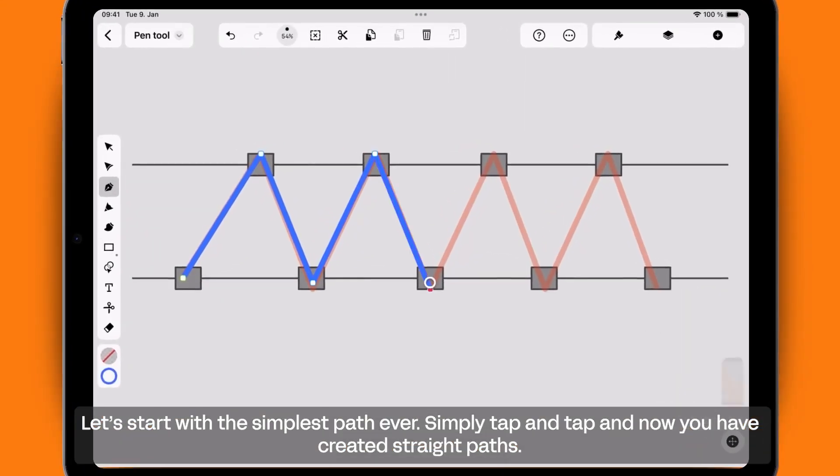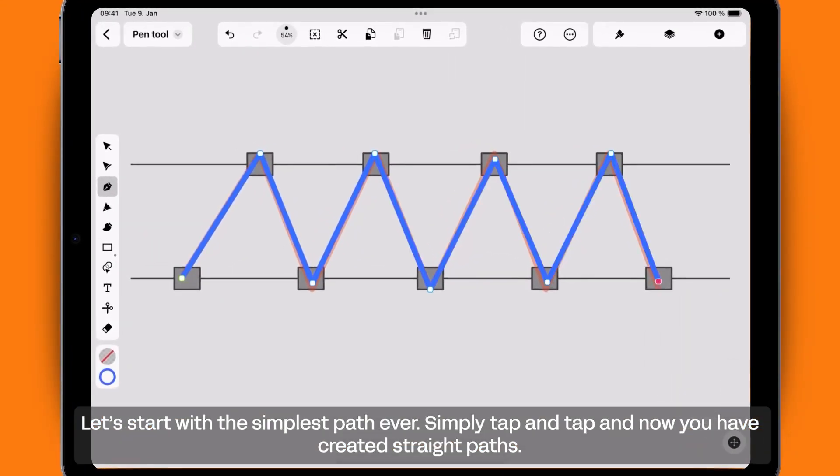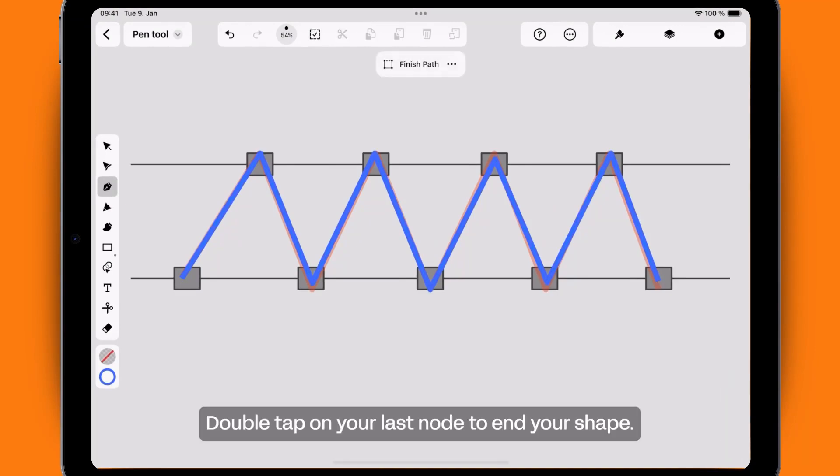Let's start with the simplest path ever. Simply tap and tap and now you have created straight paths. Double tap on your last node to end your shape.